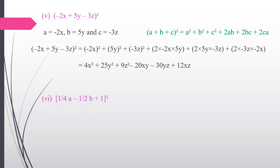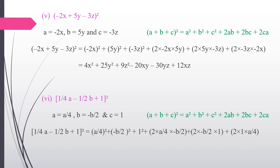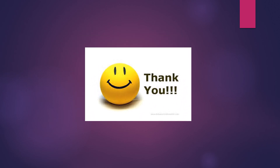Sixth subdivision: (a/4 − b/2 + 1)². Using the same identity (a + b + c)², where a = a/4, b = −b/2, c = 1. Applying the identity, the answer is a²/16 + b²/4 + 1 − ab/4 − b + a/2. I hope you understand this session. Thank you, students.